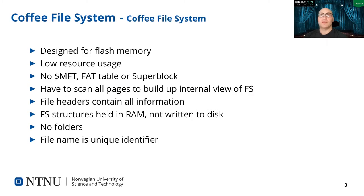The Coffee file system is designed for flash memory and low resource usage. There are no centrally stored metadata: FAT has the file allocation table, NTFS has the master file table, and ext file systems have the superblock. Coffee instead scans the file system at boot time and builds metadata structures in RAM, similar to YAFFS. All metadata information needed is contained in the file headers. The file header, excluding the filename, is only 10 bytes. The file system metadata held in RAM is not written to disk.